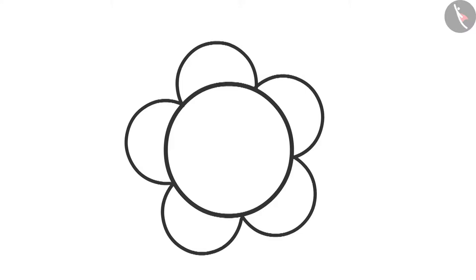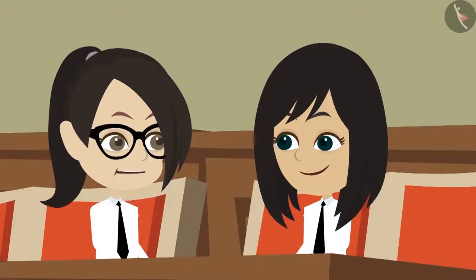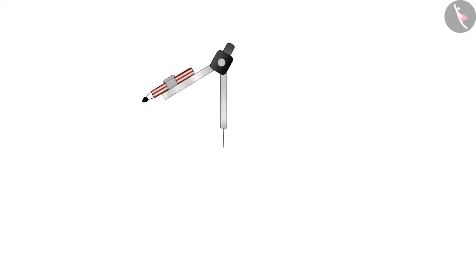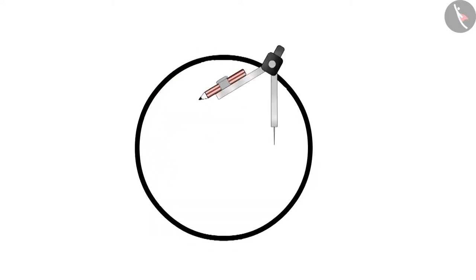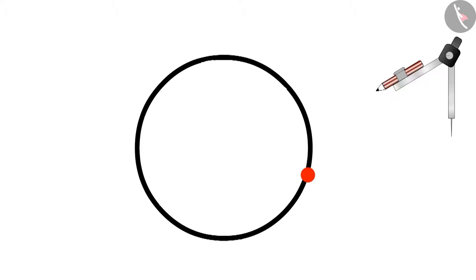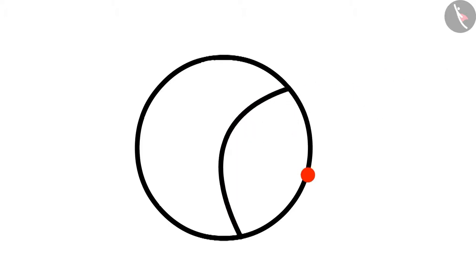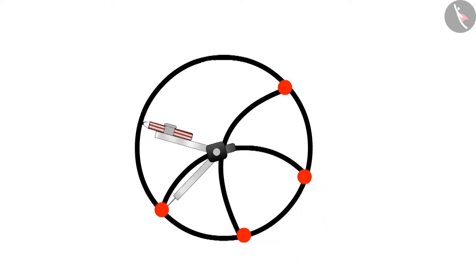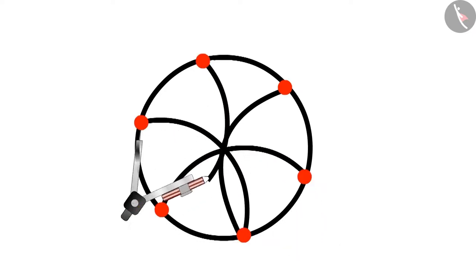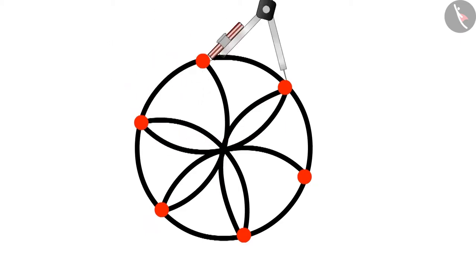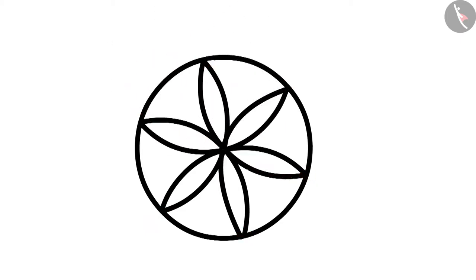Wow, the circle turned into a flower! Similarly, many designs can be made. Now I will try. Let's draw a circle, then draw a circle inside this circle by taking any point on the boundary. See the points on the boundary of the main circle where the edges of this circle are meeting, and draw circles from those points too. Repeat the process till a complete design is created. Oh wow, this is a very beautiful design!